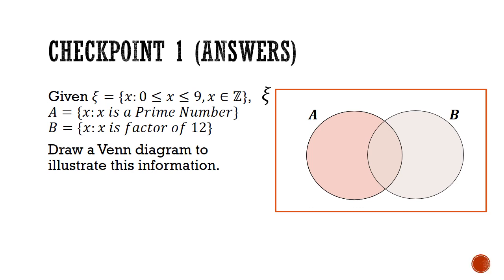Let's go through the answers. What we can first do is list out all the elements. So for the universe, that would be the numbers 0 to 9. For set A, only 4 of those numbers are prime numbers. They are 2, 3, 5, and 7.